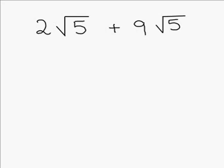2 square root 5 plus 9 square root 5. When trying to add two expressions with square roots, always check to see if you have the same number underneath the radical sign, like we do in this problem. We have square root 5 twice.